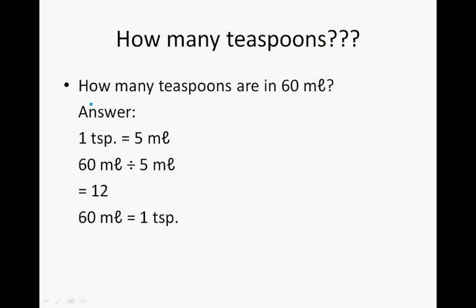How many teaspoons are in 60 milliliters? This is not comparing teaspoons with tablespoons but is just asking about the amount of milliliters. Now, 1 teaspoon is 5 milliliters, so we take the 60 milliliters and divide by 5, and we get 12. So 60 milliliters is equal to 12 teaspoons.